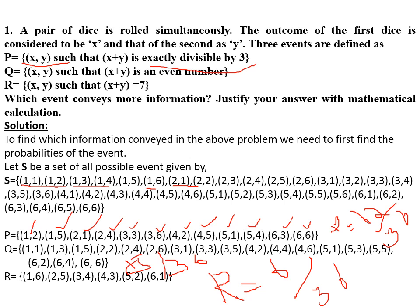Summarizing the probabilities: probability of event P is 12/36, probability of event Q is 18/36, and probability of event R is 6/36.